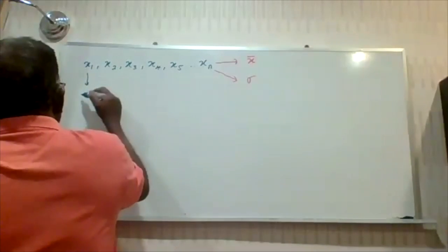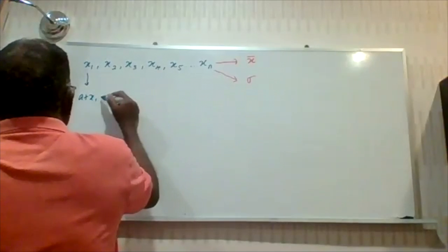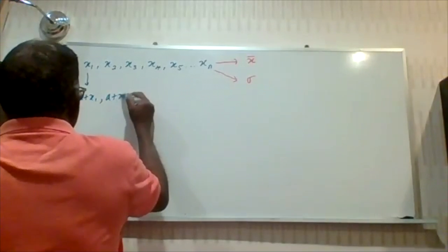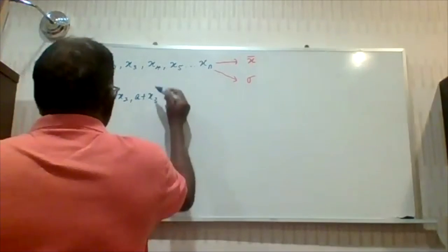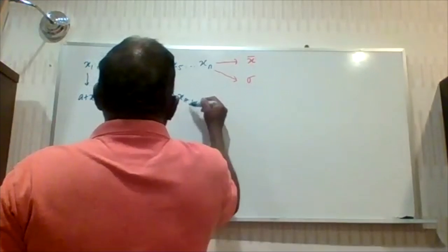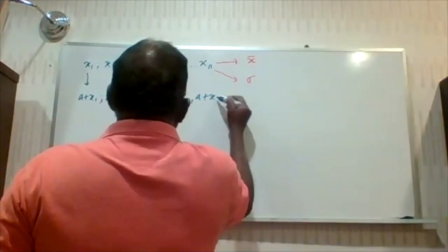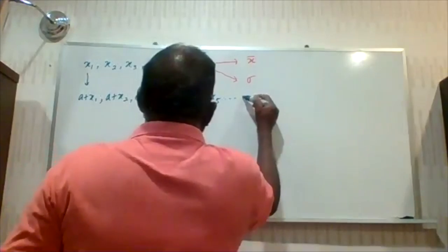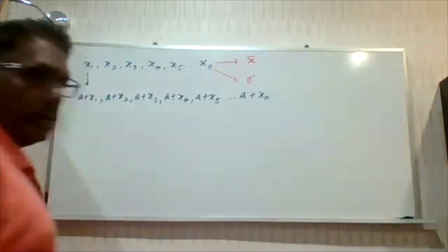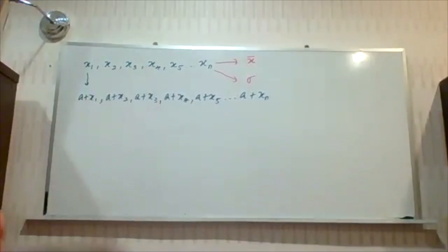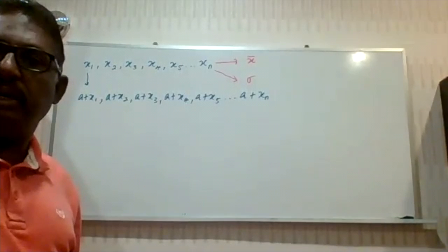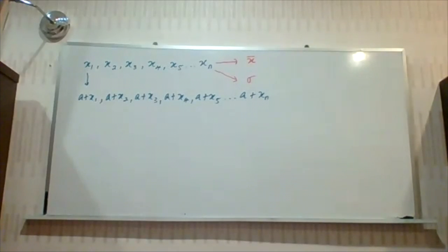That means x1 becomes a plus x1, x2 becomes a plus x2, x3 becomes a plus x3, x4 becomes a plus x4, and x5 becomes a plus x5, going on up to a plus xn. So a constant is added to each of the data. Then what happens to the mean, and what happens to the standard deviation?